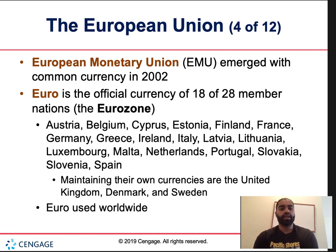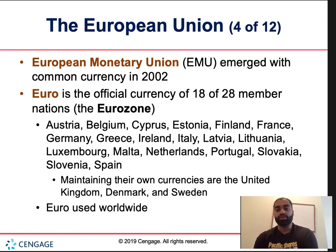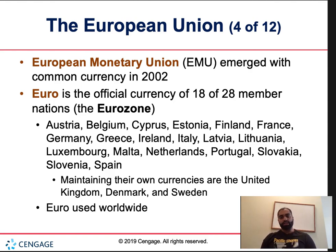The EMU emerged with a common currency in 2002. The euro is the official currency of 18 of the 28 member nations in the euro zone. Countries that maintained their own currencies include the UK, Denmark, and Sweden. The euro is used worldwide and is important — when we cover chapters 10 and 11, we'll compare the euro to the dollar, the yen, and other currencies.